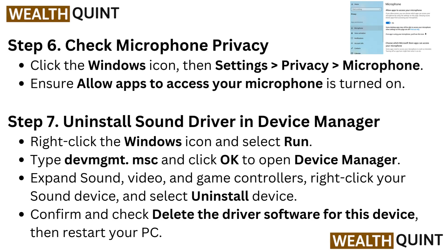Step 6: Check microphone privacy. Click the Windows icon, then Settings, then go to Privacy, then go to Microphone. Ensure allow apps to access your microphone is turned on.